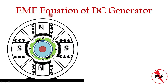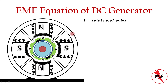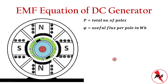To deduce the EMF equation of a DC generator, we define certain parameters. Capital P is the total number of poles — always even since magnetic monopoles are not allowed — it can be 2, 4, 6, etc. The symbol φ (phi) is the useful flux per pole in Webers — that is, the flux available at each individual pole.